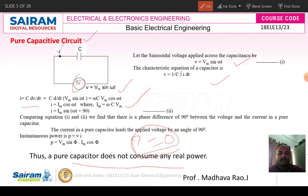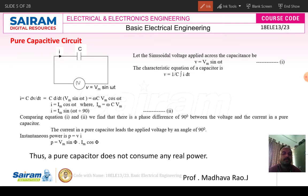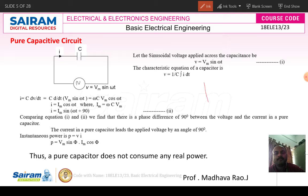Whenever the stored energy is equal it will be delivered back. So this is about the pure capacitor circuit. If asked in an exam, you first draw the circuit diagram, then take the voltage equation V = Vm sin(ωt). For the current equation, use I = C dV/dt, substitute Vm sin(ωt), differentiate, and simplify to get I = Im sin(ωt + 90°). If voltage is taken as reference, current leads by 90 degrees; if current is reference, voltage lags by 90 degrees — this is the phasor diagram.